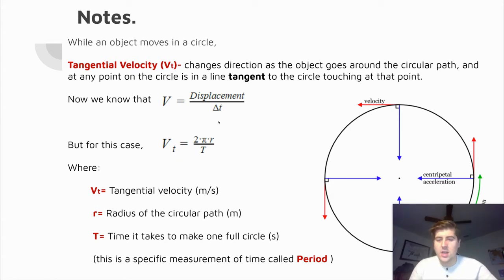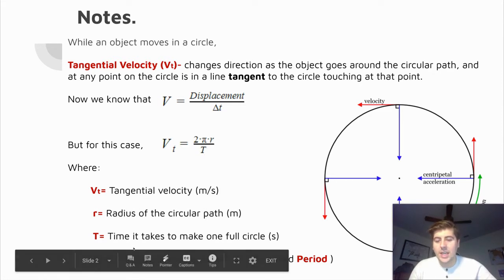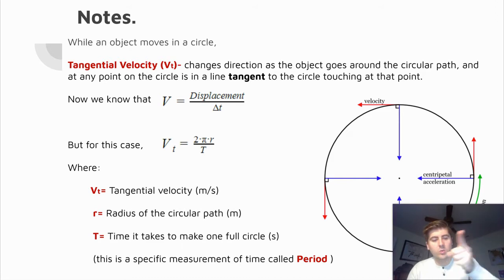Our equation here is going to be changed a little bit from the equation we already knew for velocity. Velocity is displacement divided by a change in time. So our tangential velocity is our displacement, which would be our circumference — 2πr — divided by big T, which means the time it takes to make one full circle. Another word for that is the period of the circle. Big T is the period, the amount of time it takes to make one full circle. That's our equation for tangential velocity.